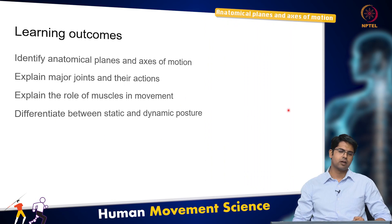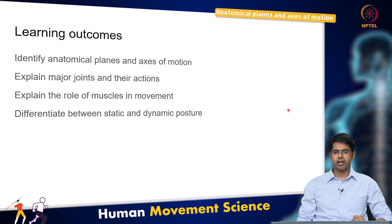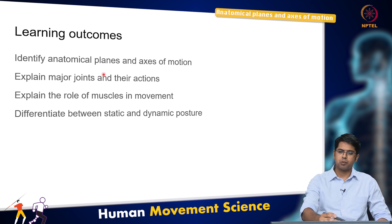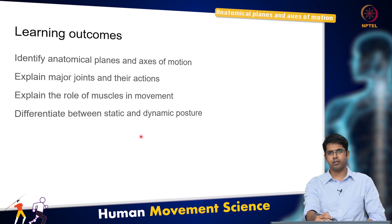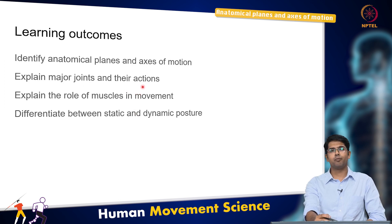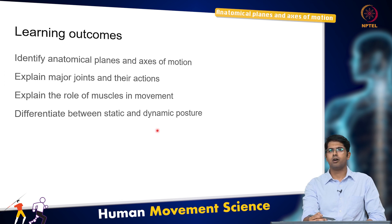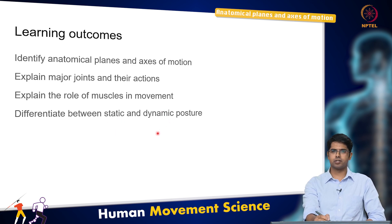Within functional anatomy, by the end of this module you will be able to identify key terminologies used for defining movements in the context of functional anatomy. Some of those things are the anatomical planes and the axes of motion. Further, you will look at the major joints within the skeletal system, their actions, the kinds of movements they can exhibit, and which muscles might be involved. You will explain the role of muscles in movement and differentiate between different kinds of posture — static posture, which is how you hold yourself, and dynamic posture, which is how you move.